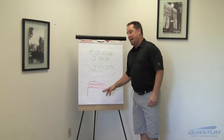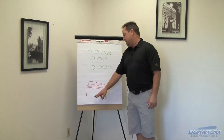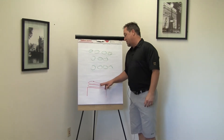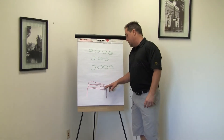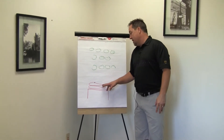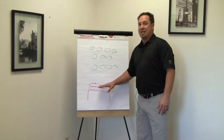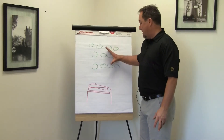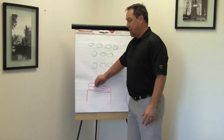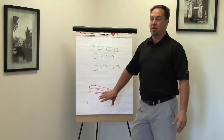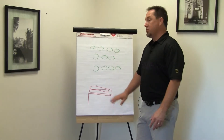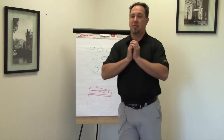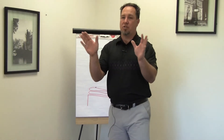What happens is we pump really cold gas through this Meissner trap — through this cold trap — and that acts like a magnet to water vapor. The water vapor will solidify itself on the surface of the Meissner trap and change states, giving us better pressure and getting to pressure faster.